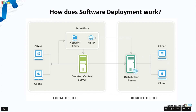In a distributed workforce, computers can be in any location. For remote offices, we have a distribution server option, which can get software from a network share or HTTP, store it locally, and distribute it to client machines in that office — minimizing bandwidth consumption. This is a simple architecture overview, and we'll discuss these things in more detail as we move on.